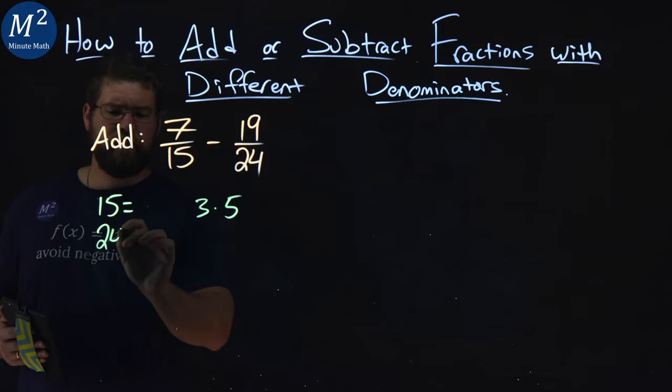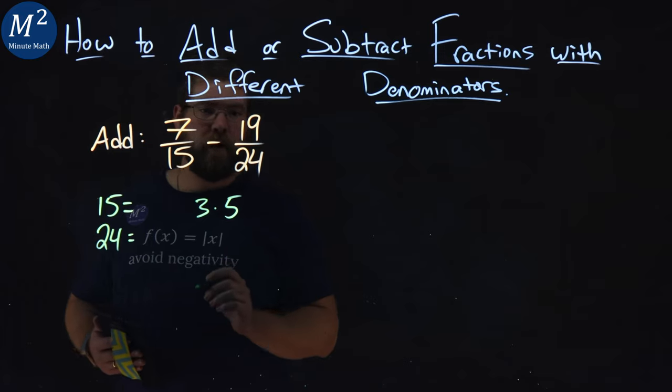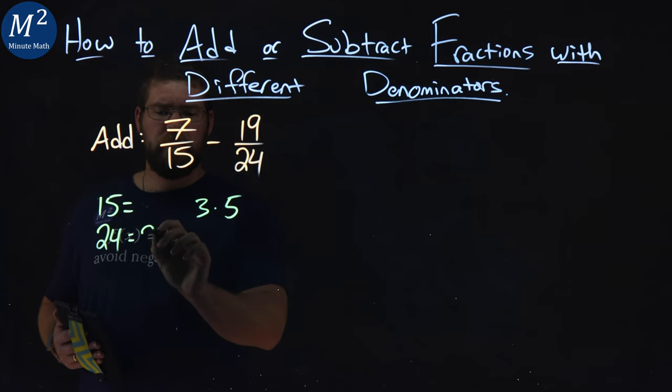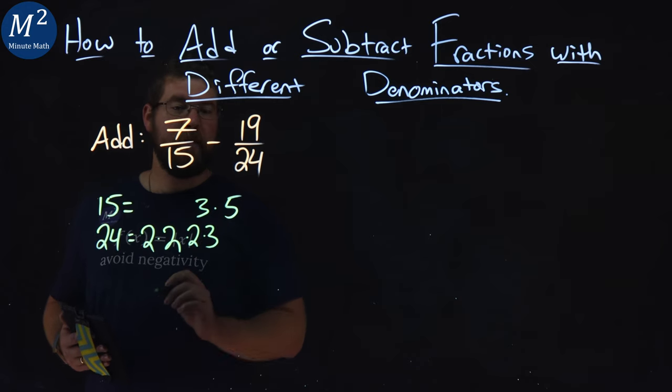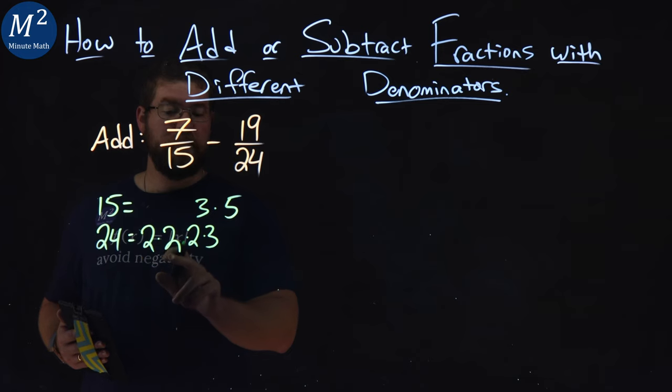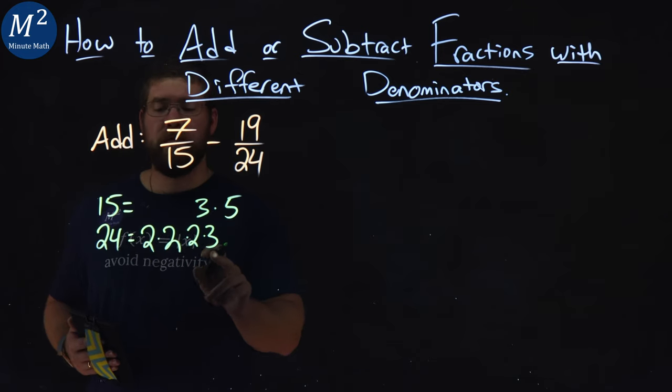Now what about 24? 24 comes out to be, divided by 2 is 12, 12 divided by 2 is 6, 6 is 2 again times 3. So 24 is 2 times 2 times 2 times 3.